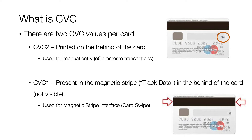For a given card there are two CVC values: CVC1 and CVC2. CVC2 is printed and visible on the back of the card, below the magnetic stripe on the right side. This CVC value is used for manual entry transactions — for example, whenever we do a transaction on an e-commerce website, we enter the card number, expiry date, and CVC value. The CVC value we enter is the one visible on the plastic card, and this is called CVC2.